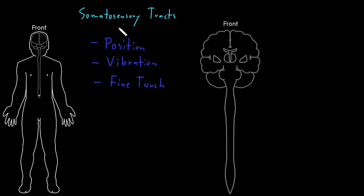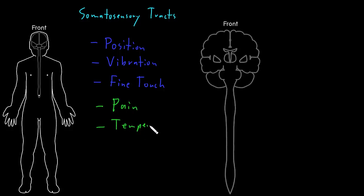The other big grouping of types of somatosensory information that tend to travel together includes the sense of pain, temperature sense, and what we can call gross touch sense, or less precise touch sense information.